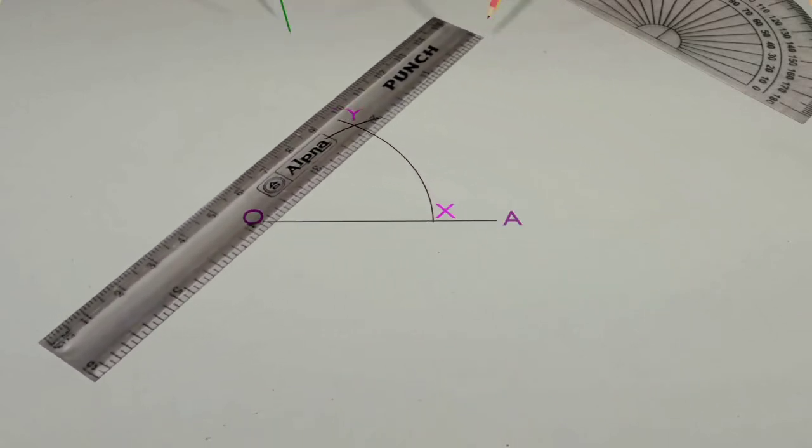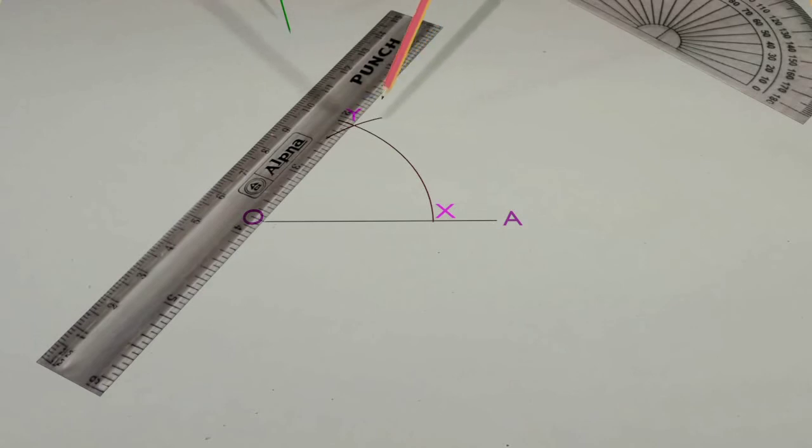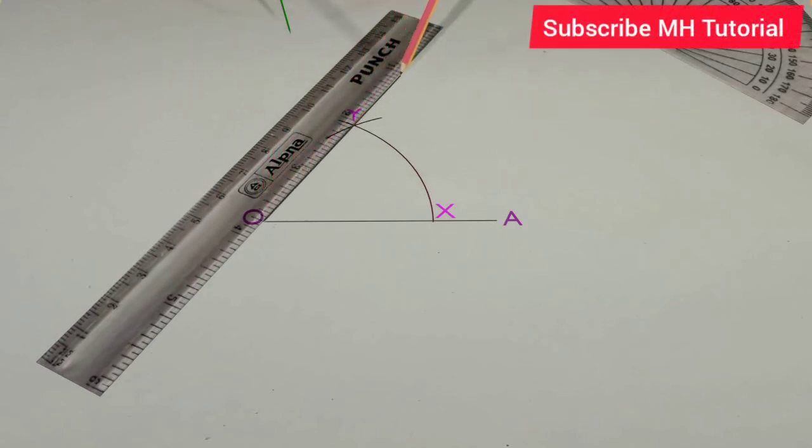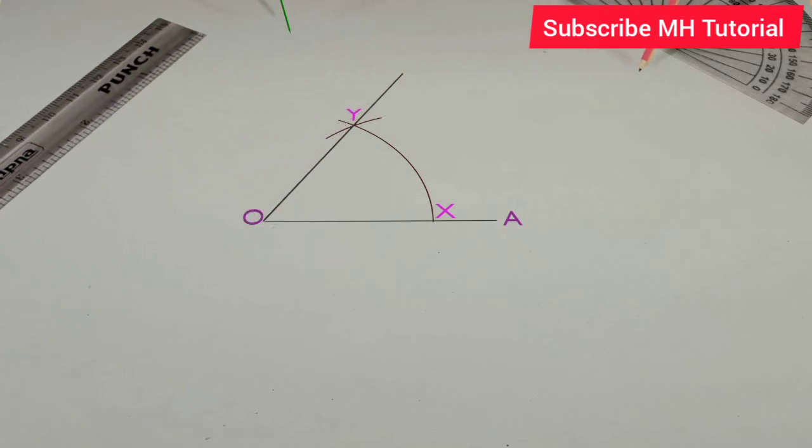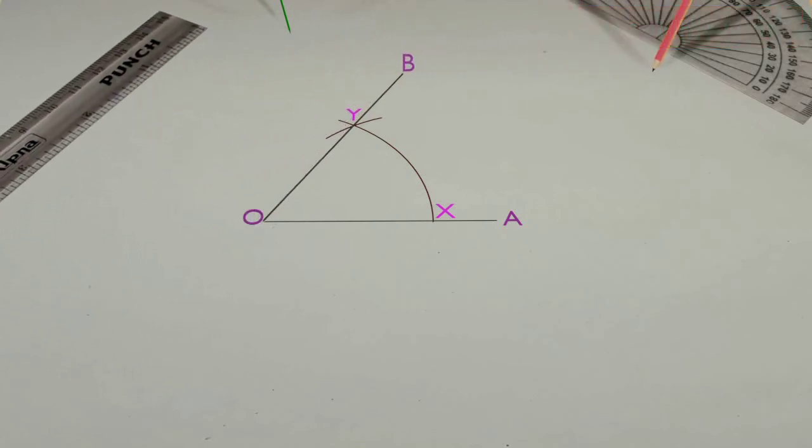Then align the ruler about the point O and the point Y, and draw a line segment between them. This line segment is named OP. Thus, the angle AOP is a 60 degrees angle.